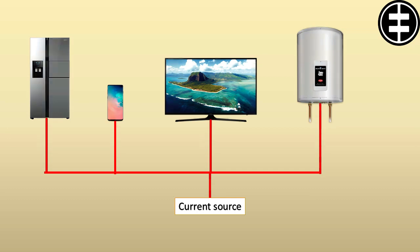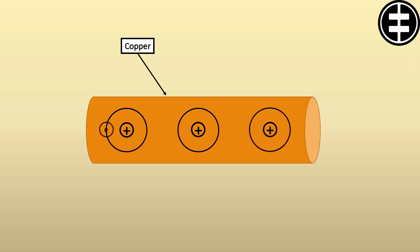All electrical and electronic devices require current to operate. Copper is a good conducting material. Let's imagine a copper wire which is filled with copper atoms. Copper is one of those elements that has only one electron in its outermost shell.